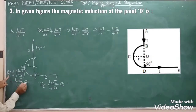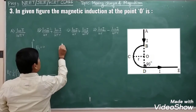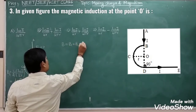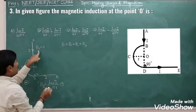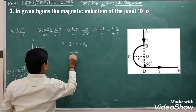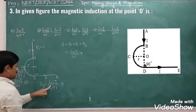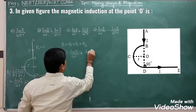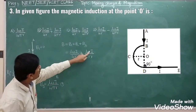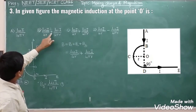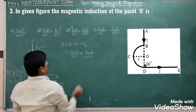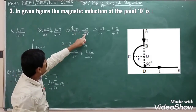The direction of all contributing fields is the same, so the resulting magnetic field is B1 + B2 + B3. B1 is 0, B2 is μ₀i/4r, and B3 is μ₀i/4πr. Looking at the given options, the third option is correct: μ₀i/4r + μ₀i/4πr.